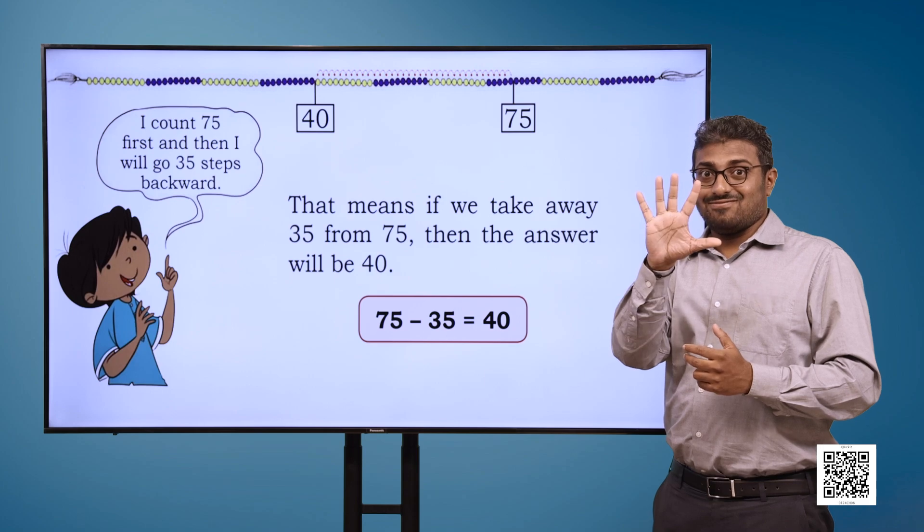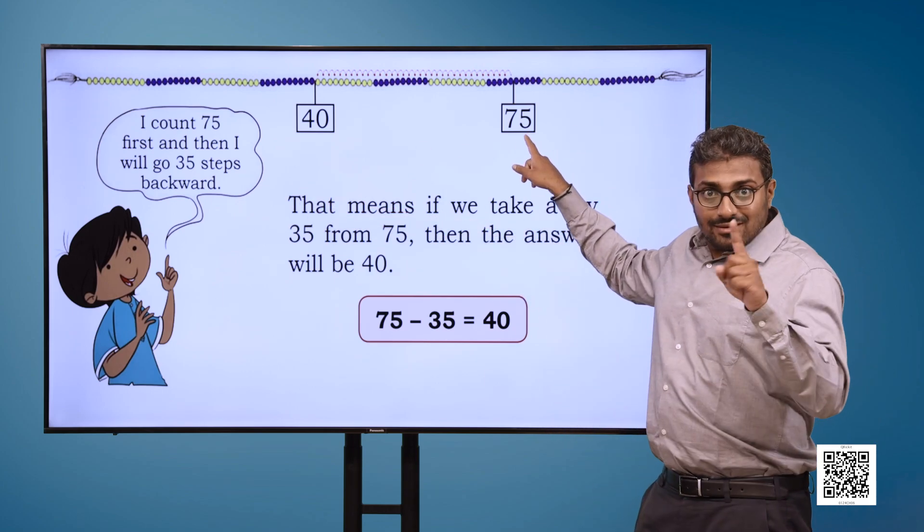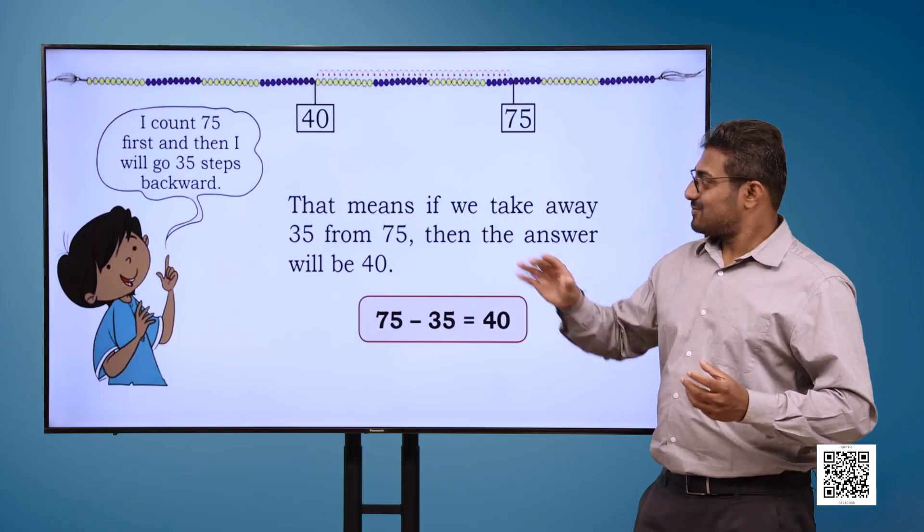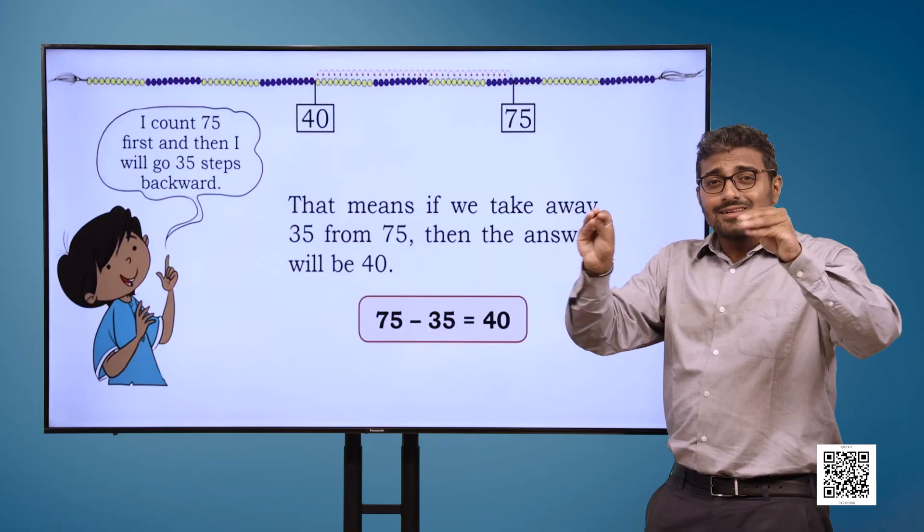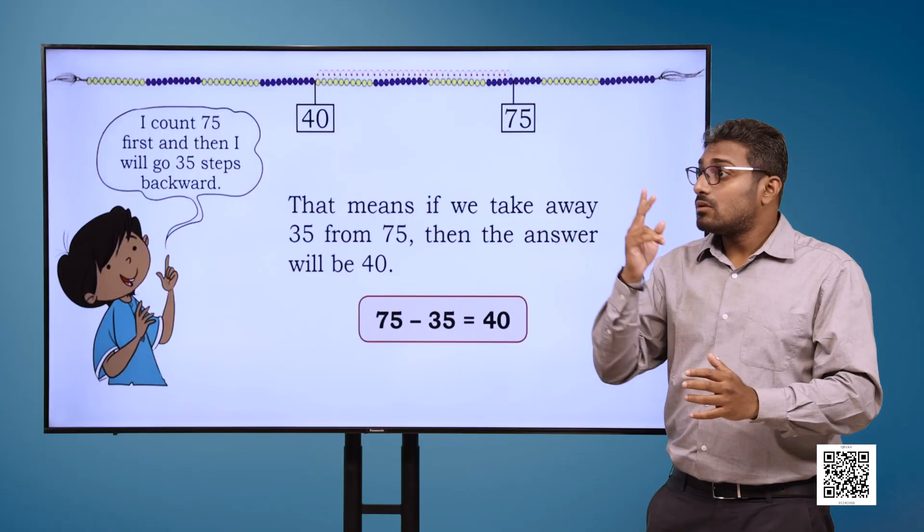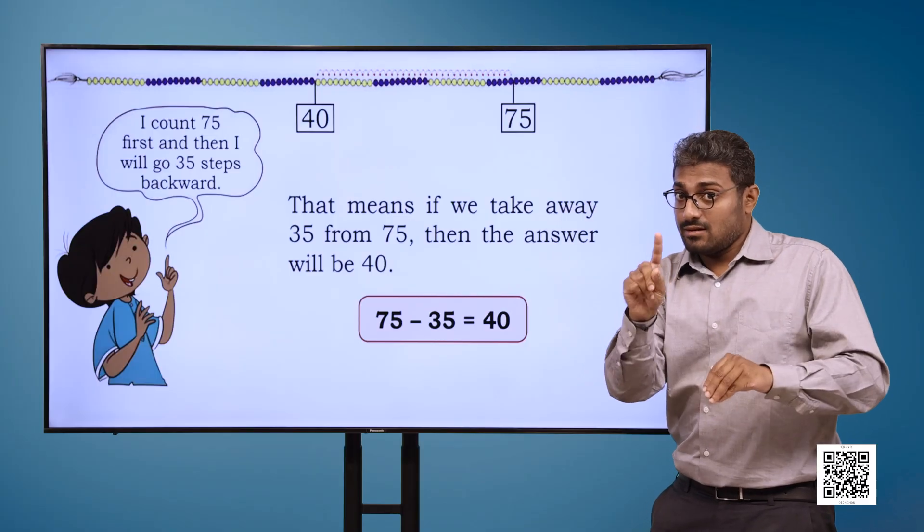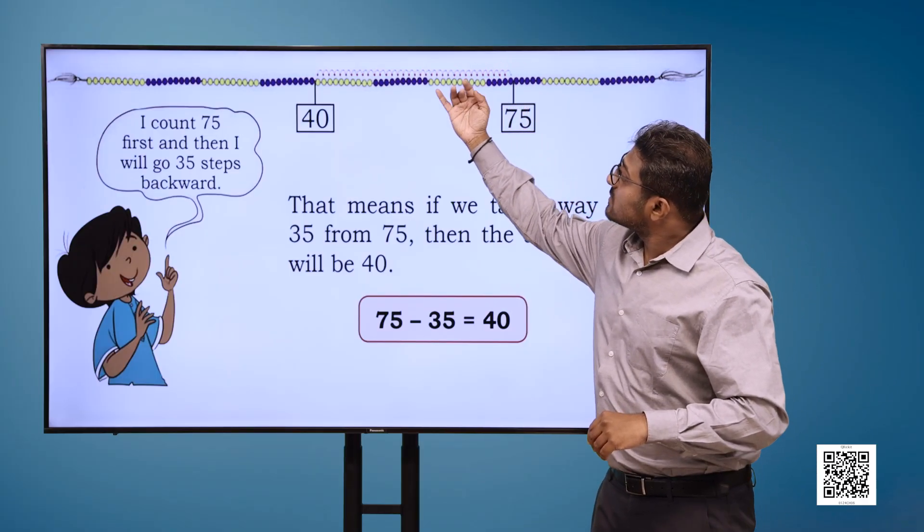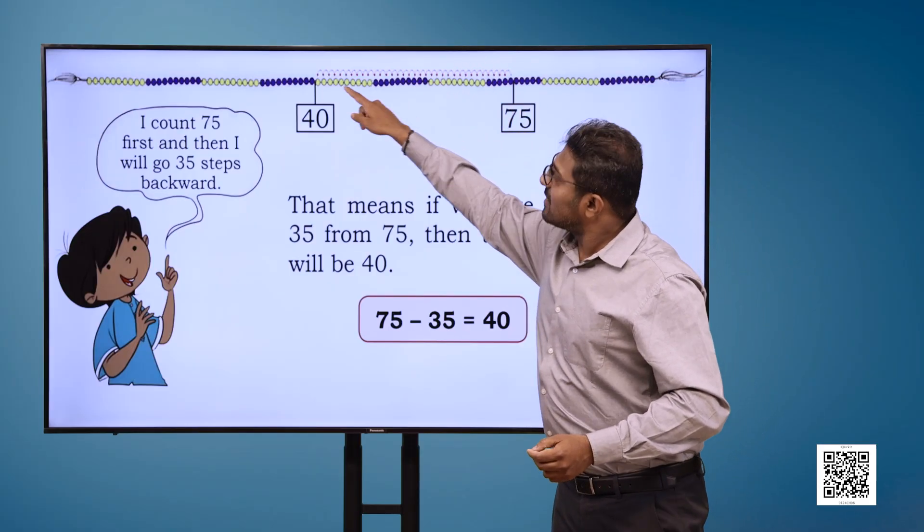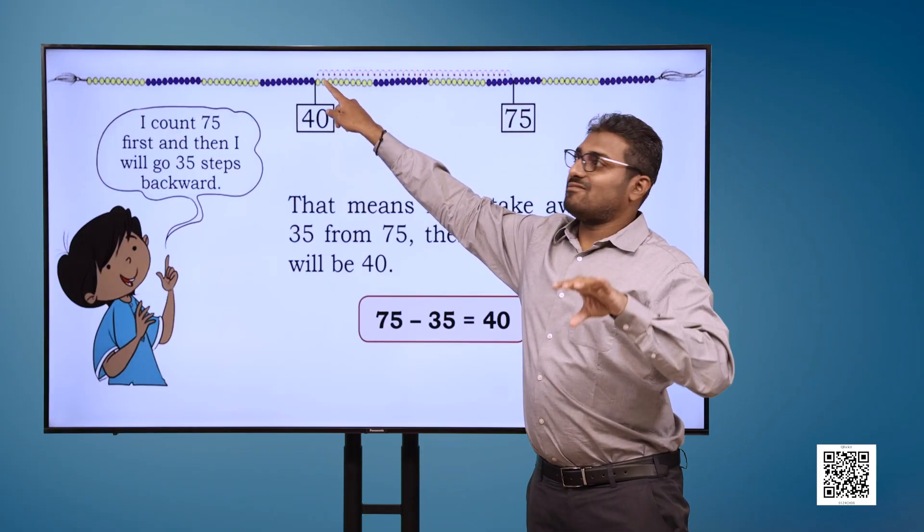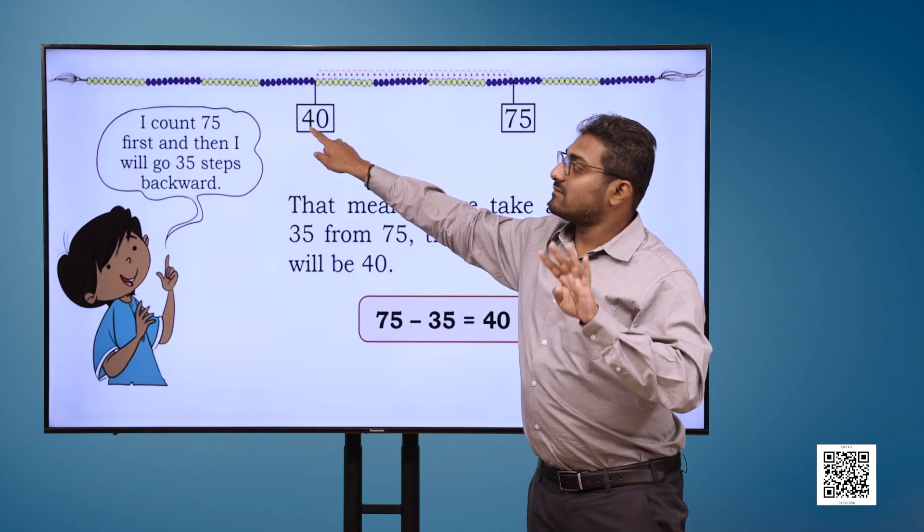Now we have the Ginlari here. The boy says, I count 75 first and then I will go 35 steps backward. That means, if we take away 35 from 75, then the answer will be 40.